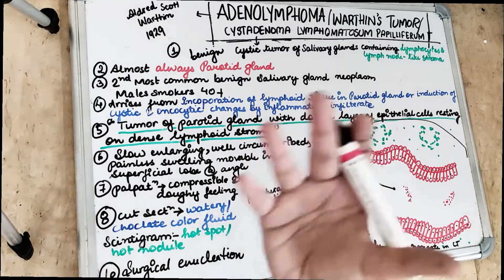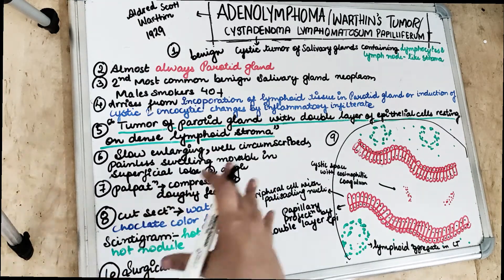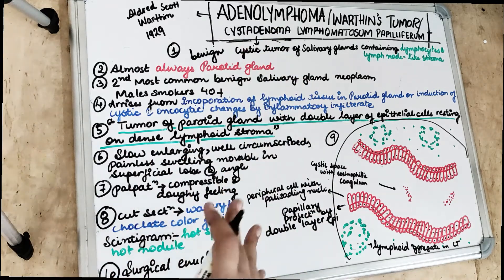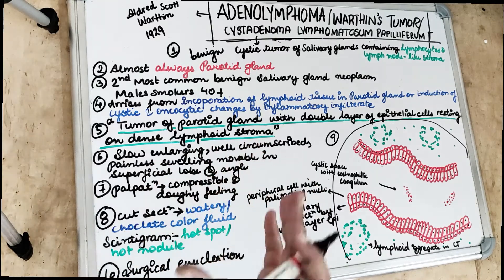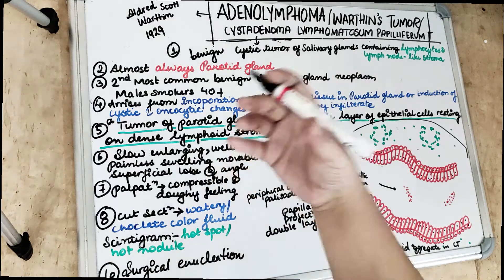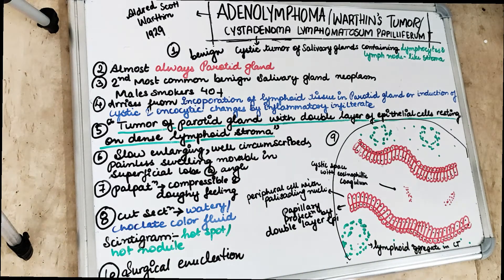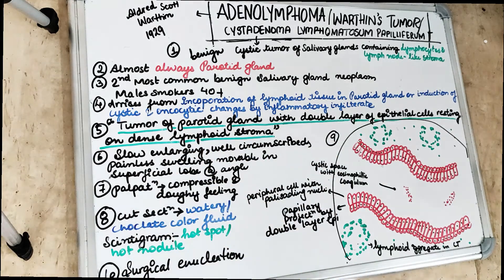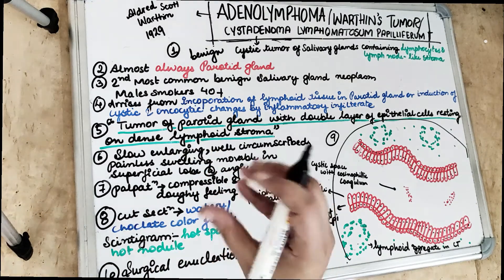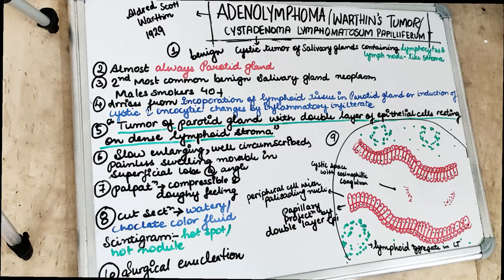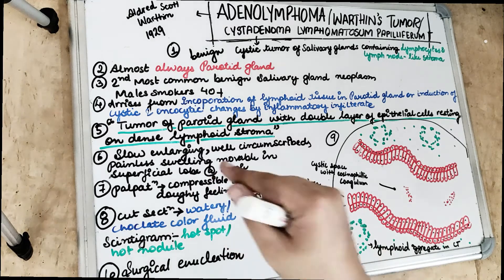Adenolymphoma is also a movable swelling. Because it most commonly involves the parotid gland, there is going to be a swelling at the angle of the mandible — in the superficial lobe of the parotid gland. It can grow up to 2 to 4 cm in diameter. On palpation, you will feel a compressible, doughy feeling — as if you are pressing dough. The swelling is compressible.